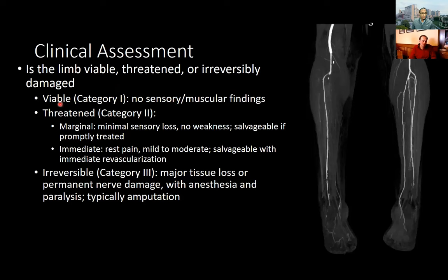A threatened limb indicates sensory loss, potentially some rest pain — still salvageable if treated promptly. What we want to avoid is a patient who has reached irreversible tissue damage (Category 3), with anesthesia or paralysis. There is no viable tissue to salvage; those patients would proceed to amputation.